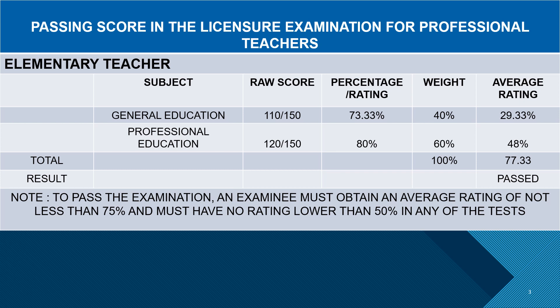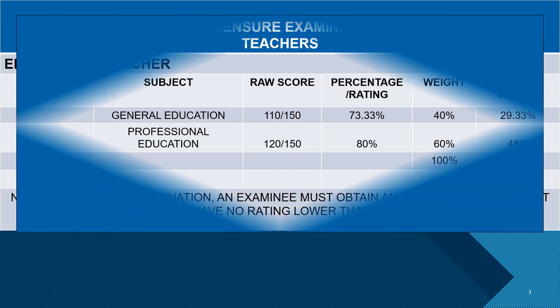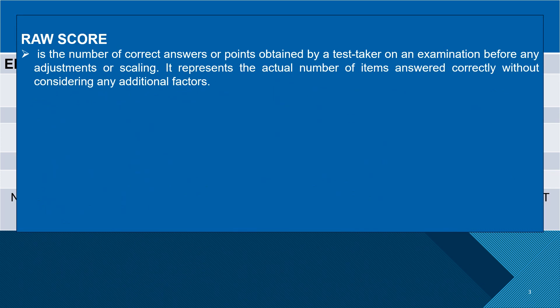In this table, you will notice that we have the raw score, the percentage or rating, and the average rating. First, the raw score: the raw score is the number of correct answers or points obtained by a test taker on an examination before any adjustments or scaling. It represents the actual number of items answered correctly without considering any additional factors.